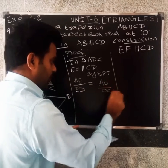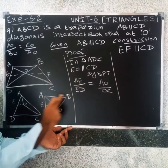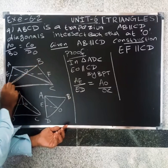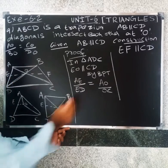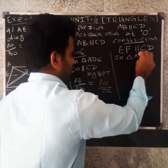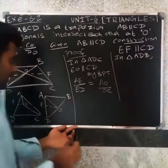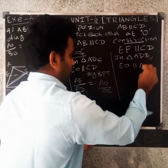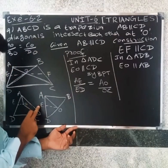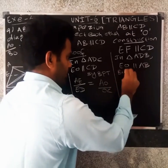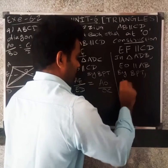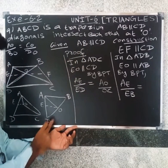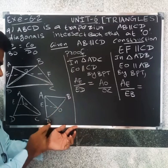Next, consider triangle ABD. EO parallel to CD. By Basic Proportionality Theorem, AE divided by ED equals BO divided by OD.